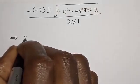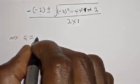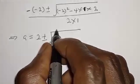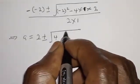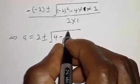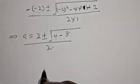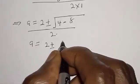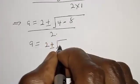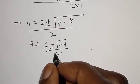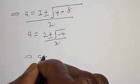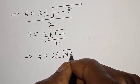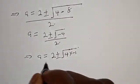Then we have 2 plus or minus square root of 4 minus 8 over 2. That simplifies to 2 plus or minus square root of minus 4 over 2. This equals 2 plus or minus square root of 4 multiplied by minus 1, divided by 2.